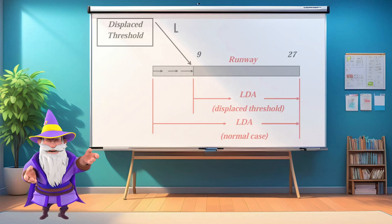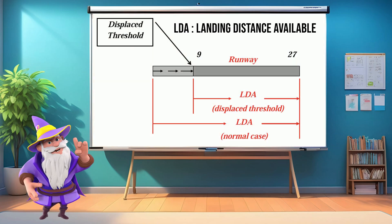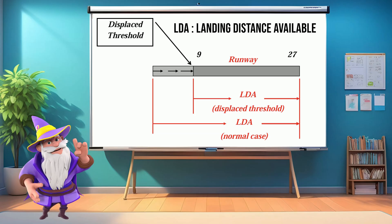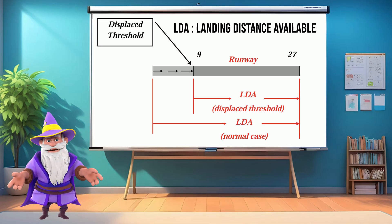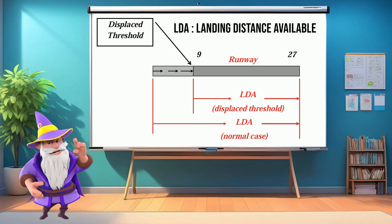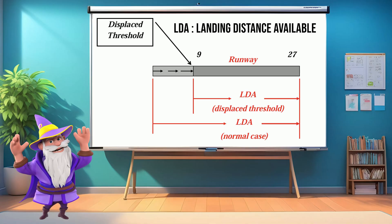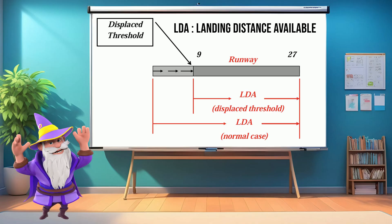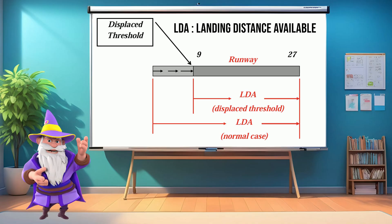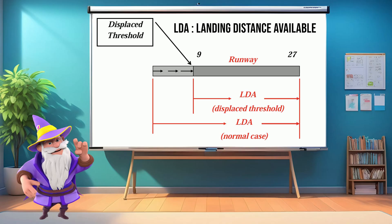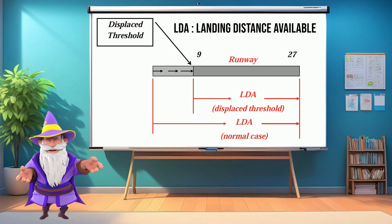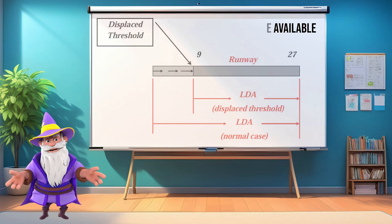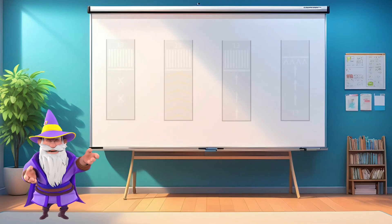We will now look at landing distance available, or LDA — one of the most important runway distances for every approach. LDA is the length of runway declared available for landing and the ground roll after touchdown. Unlike TORA or TODA, which focus on takeoff, LDA is all about stopping safely. It begins at the usable threshold and ends at the runway's stopping point, meaning displaced thresholds can reduce the LDA even if the physical runway is longer.